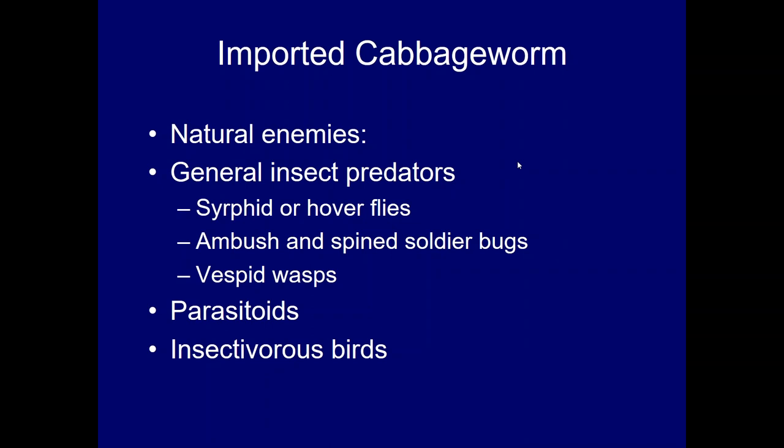The imported cabbage worm has a number of natural enemies that assist in natural control. General insect predators like syrphid or hoverflies can feed on the eggs. Ambush bugs and spined soldier bugs can feed on the caterpillars, and vespid wasps are predators that also feed on caterpillars on the plants. Parasitoids are by far the most important sources of mortality for this pest, and insectivorous birds can also be helpful.